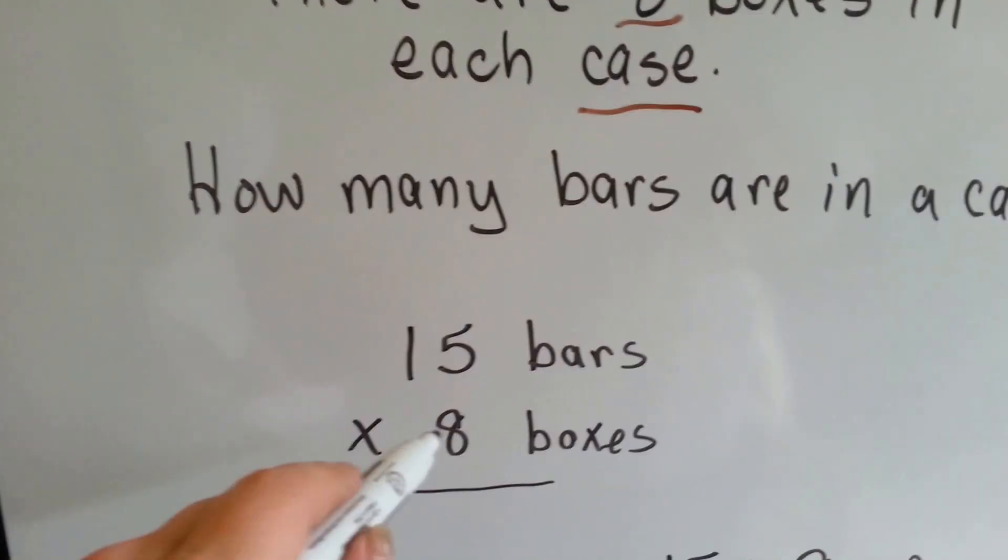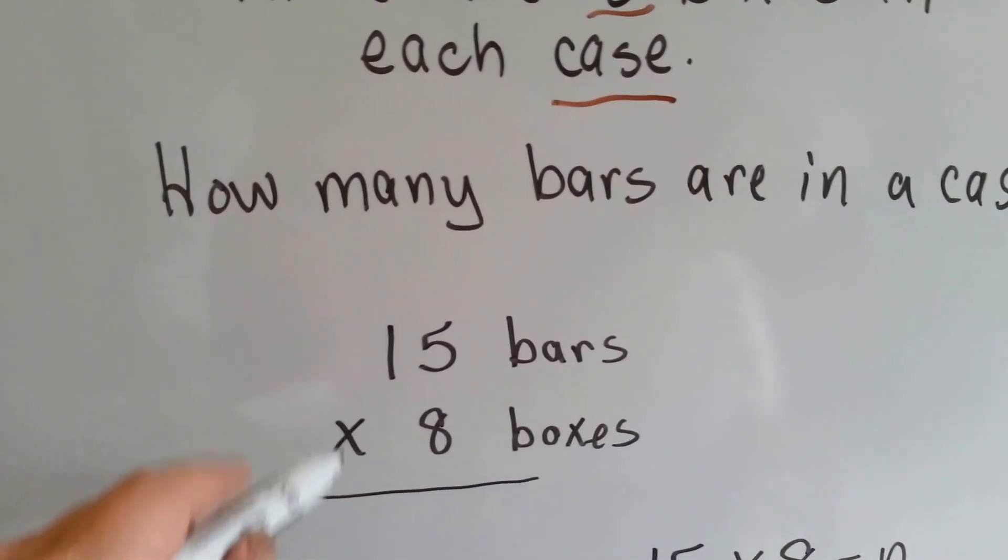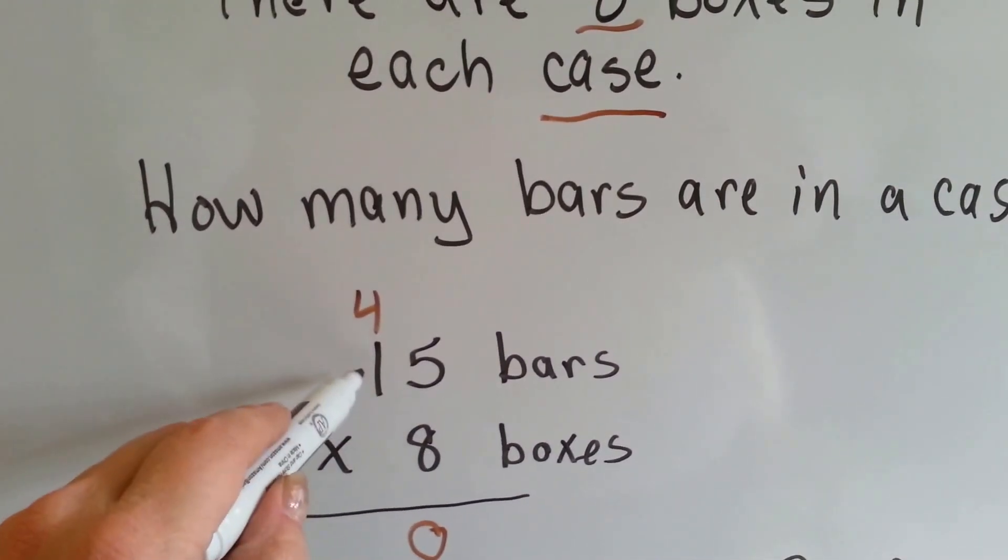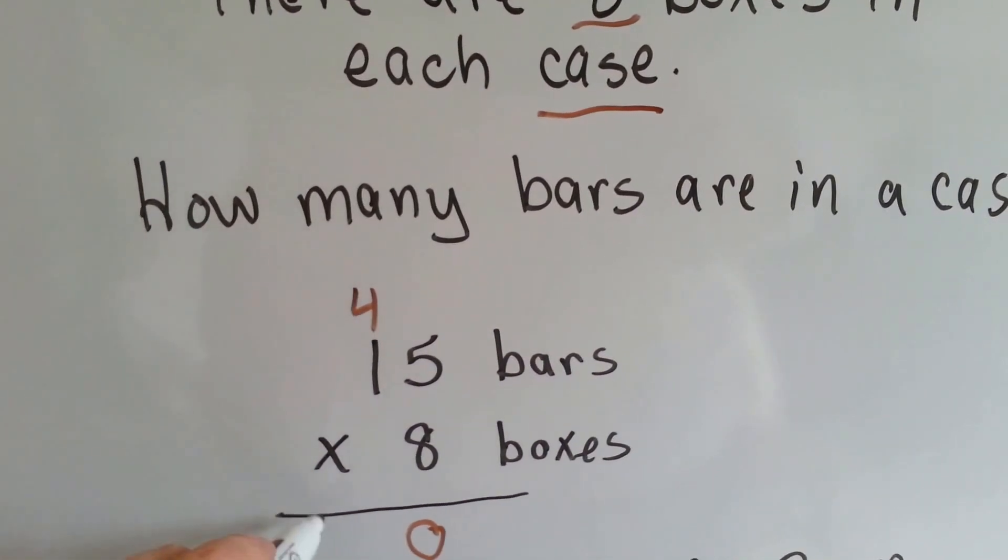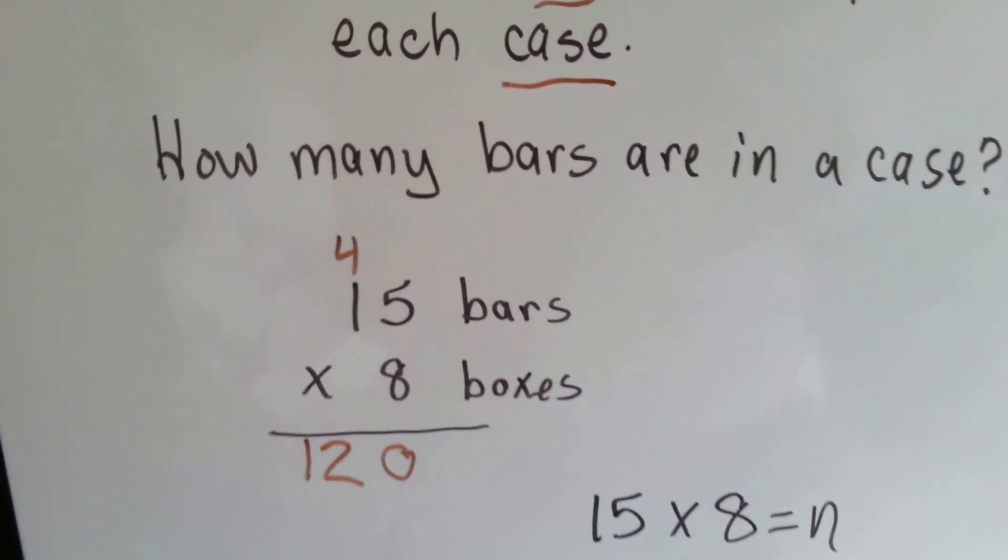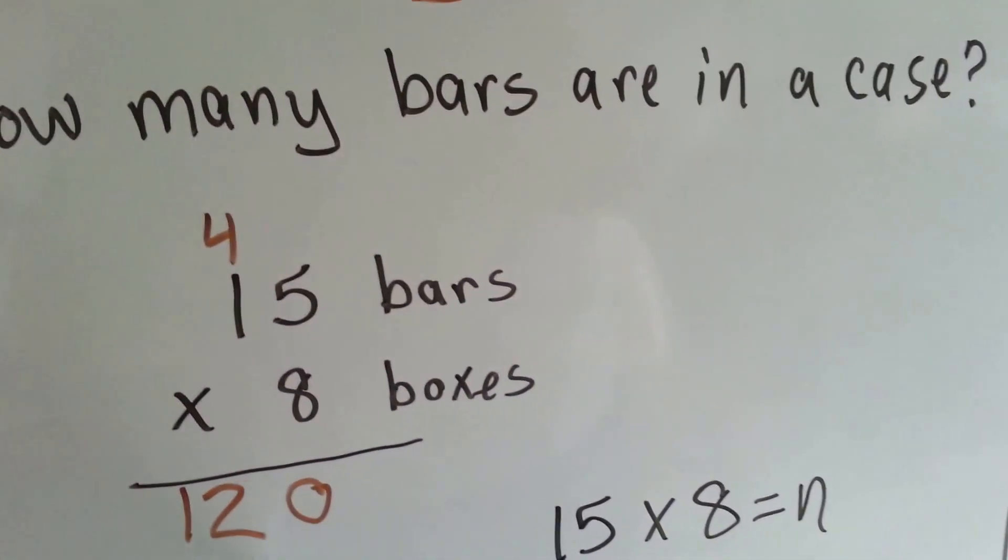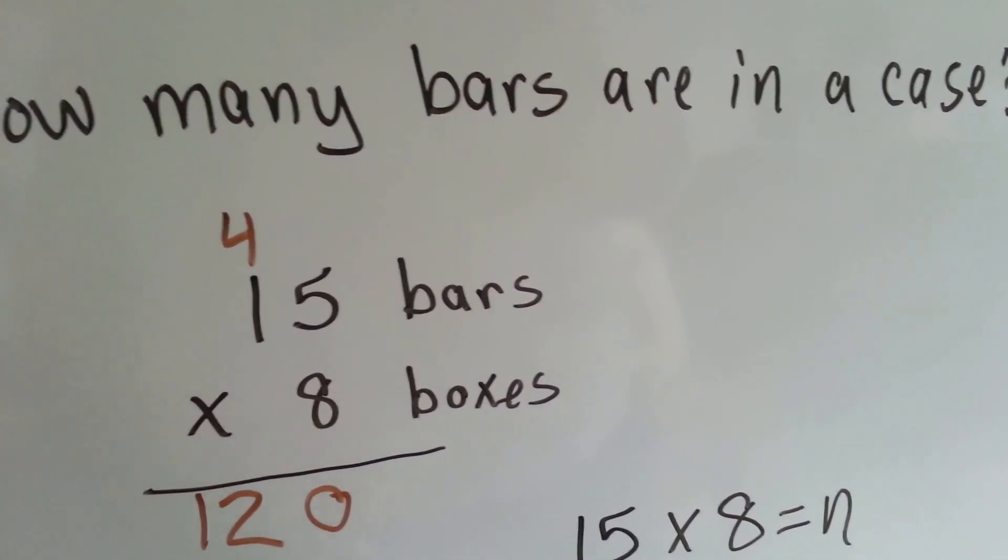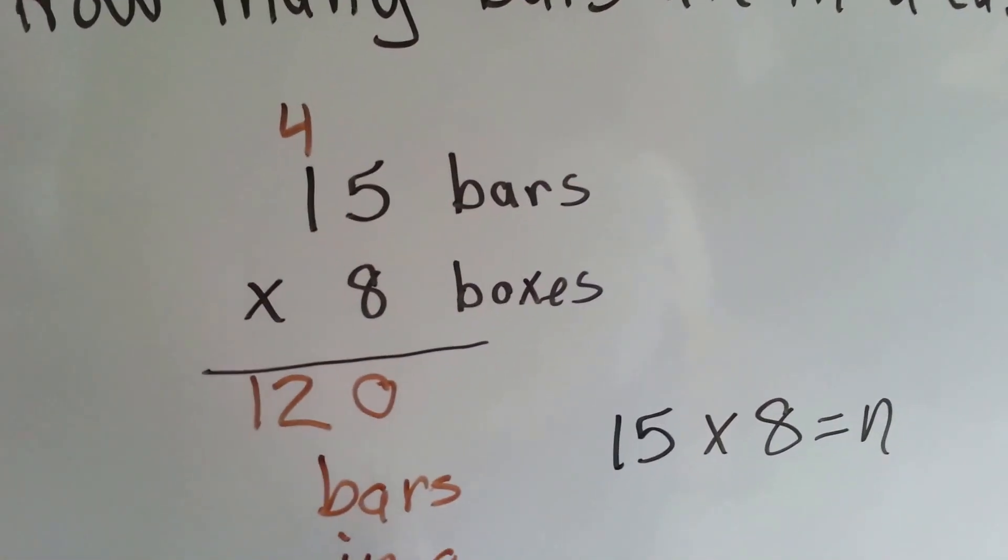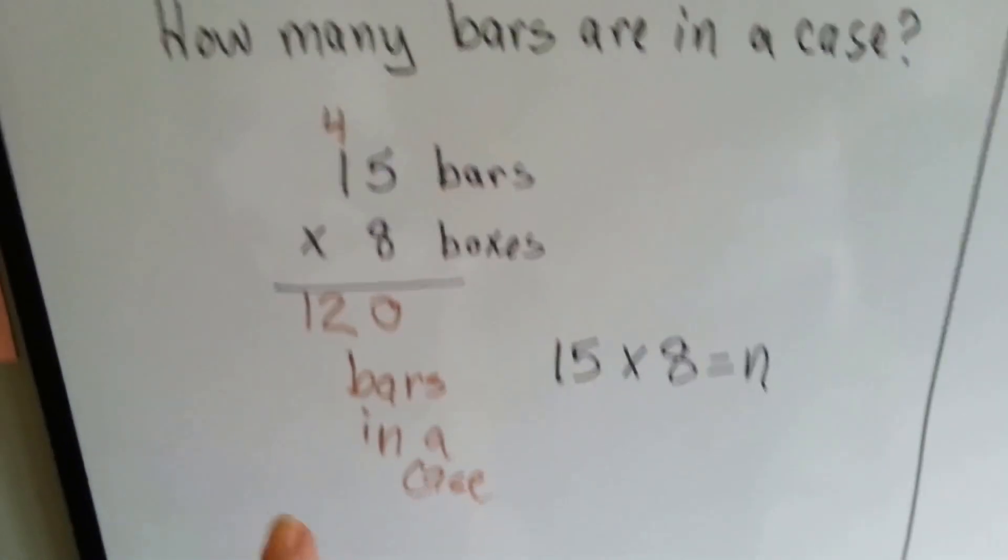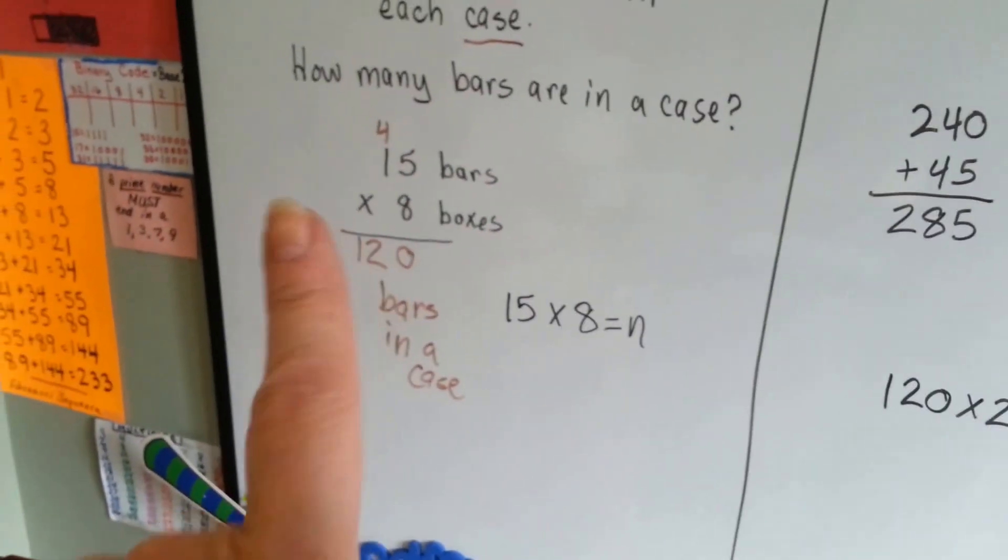So let's do this. 8 times 5 is 40. We carry the 4 and put the 0 down. 8 times 1 is 8, plus 4 is 12. So that means there's 120 candy bars in a case. We need to remember that because it's important.